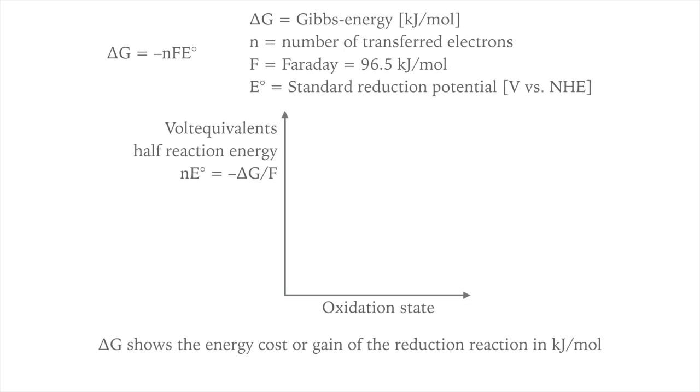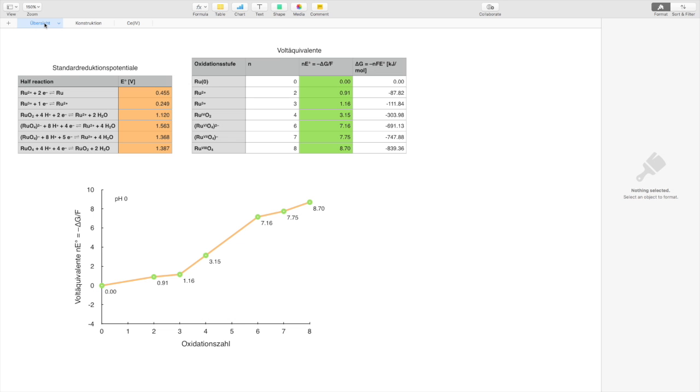I want to show you how to construct and interpret such a diagram. I will demonstrate the construction of the Frost diagram of ruthenium in its different oxidation states with the corresponding oxides. First, we need a collection of reduction potentials between the different ruthenium species. Each oxidation state that you want to put on the diagram has to appear at least once.